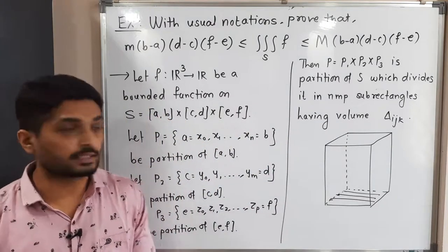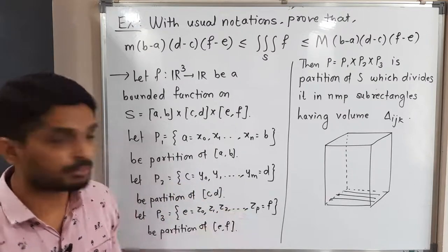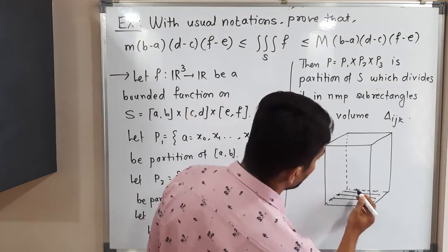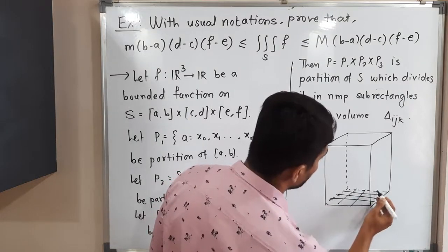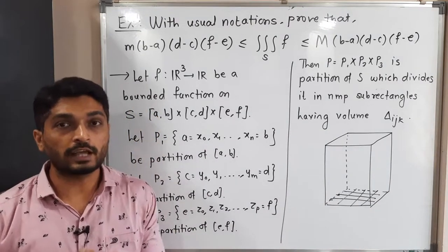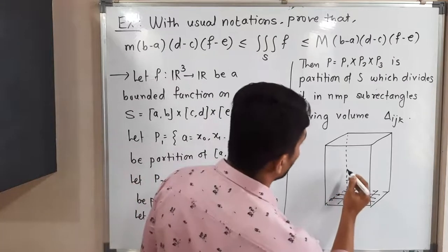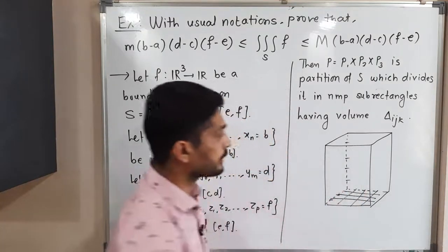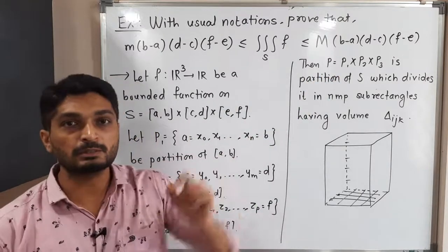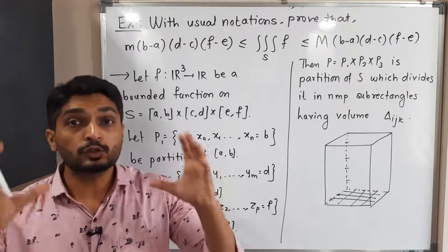After that we take partition P2 of the closed interval [c,d]. As you can see, P2 is along the y-axis, so this region will be divided into further parts. Then P3 is a partition of the closed interval [e,f], meaning along the z-axis we have some partitions.